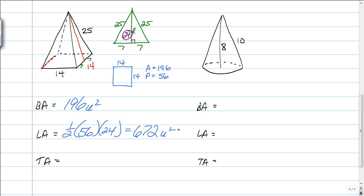And then, again, pyramids only have one base. So, we just have to add the base and the lateral area together to find a total surface area of 868 units squared. And that's it. We're good to go. Why don't you try the cone on your own? Pause the video. See if you can handle the cone on your own.